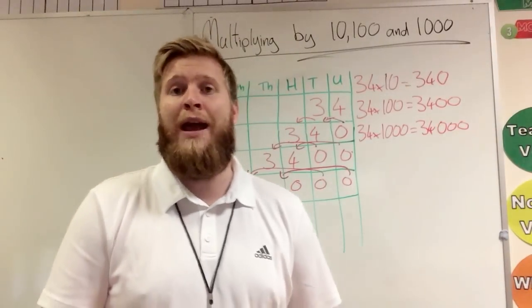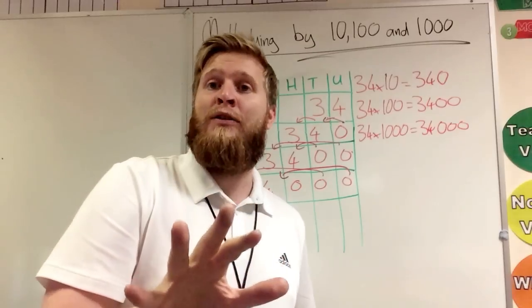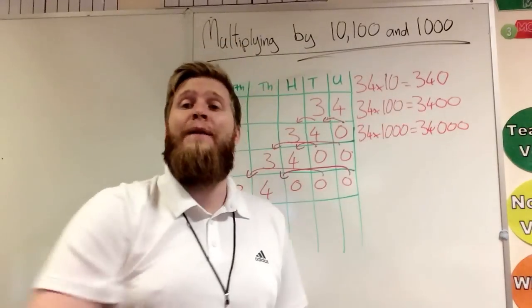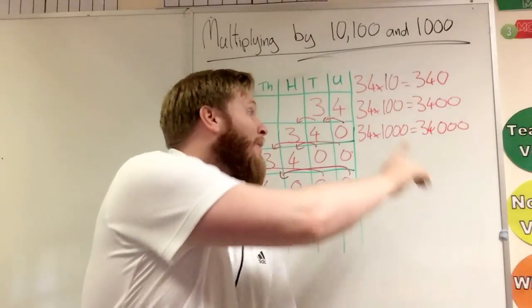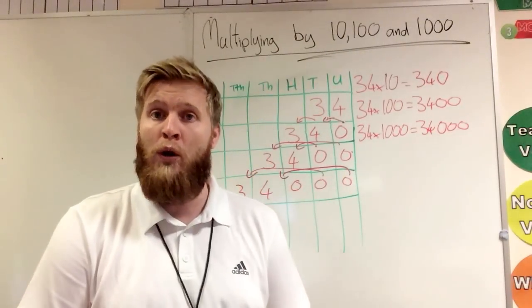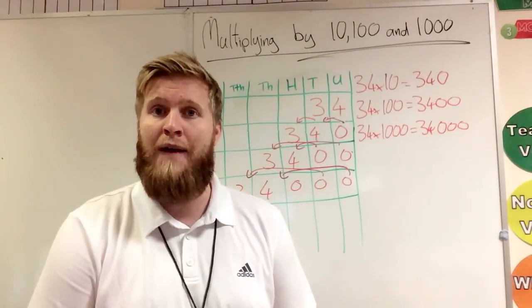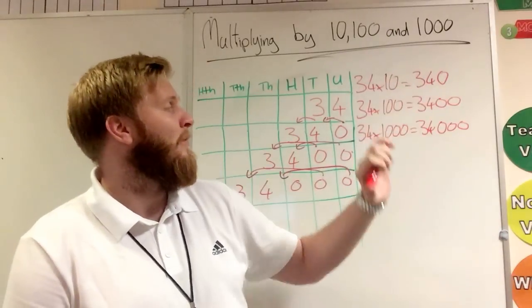Now that's not technically right. We can add one zero if it is a whole number, we can add two zeroes if it's a whole number, and we can add three zeroes if it's a whole number. So it means 34 times ten would be 340,